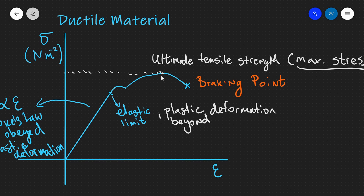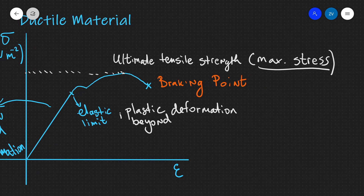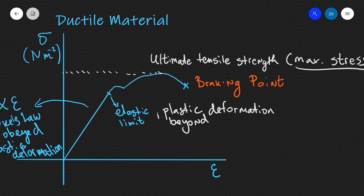Beyond the elastic limit, plastic deformation occurs. We then reach the ultimate tensile strength — the maximum stress the material can withstand — before finally reaching its breaking point. That is the stress against strain graph for a ductile material.